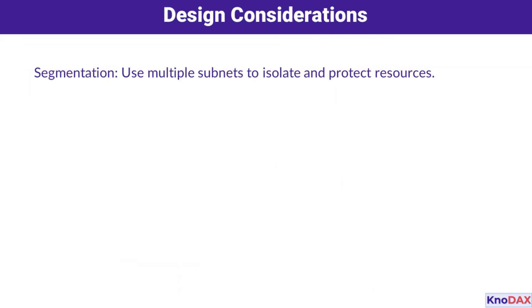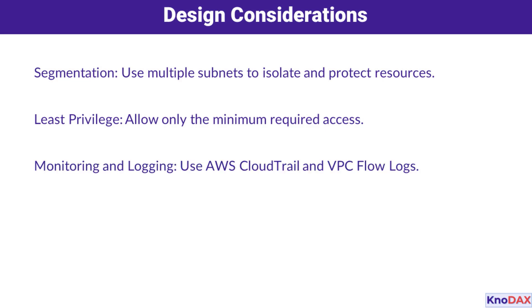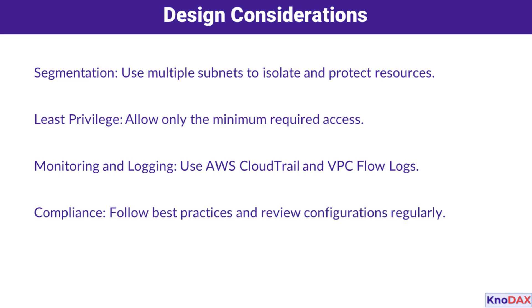When designing VPC architectures, there are several best practices to follow. First, use segmentation by dividing your VPC into public and private subnets to isolate resources. Next, apply the principle of least privilege to allow only the minimum necessary access. Additionally, implement monitoring and logging using tools like AWS CloudTrail and VPC flow logs to track activity and detect potential security incidents. Finally, ensure compliance with best practices by regularly reviewing and updating your configurations.